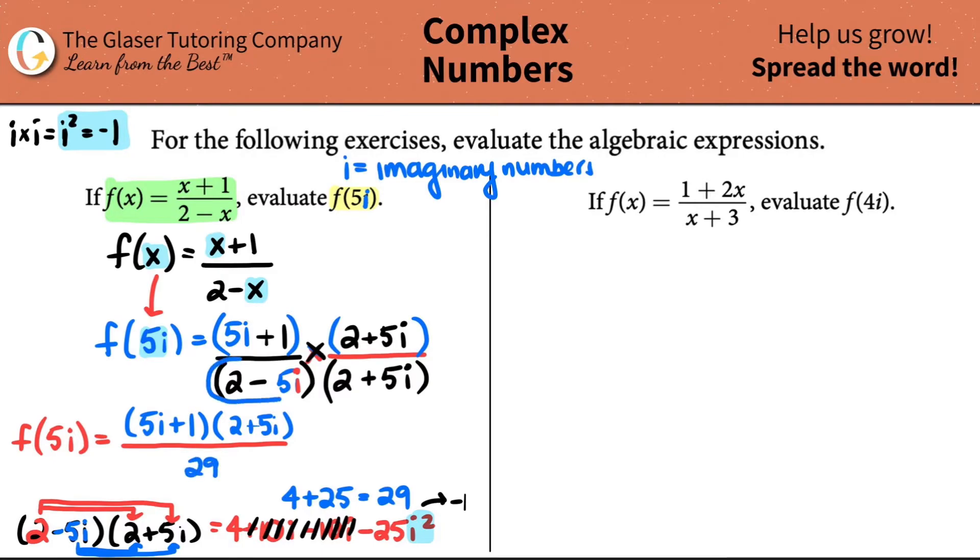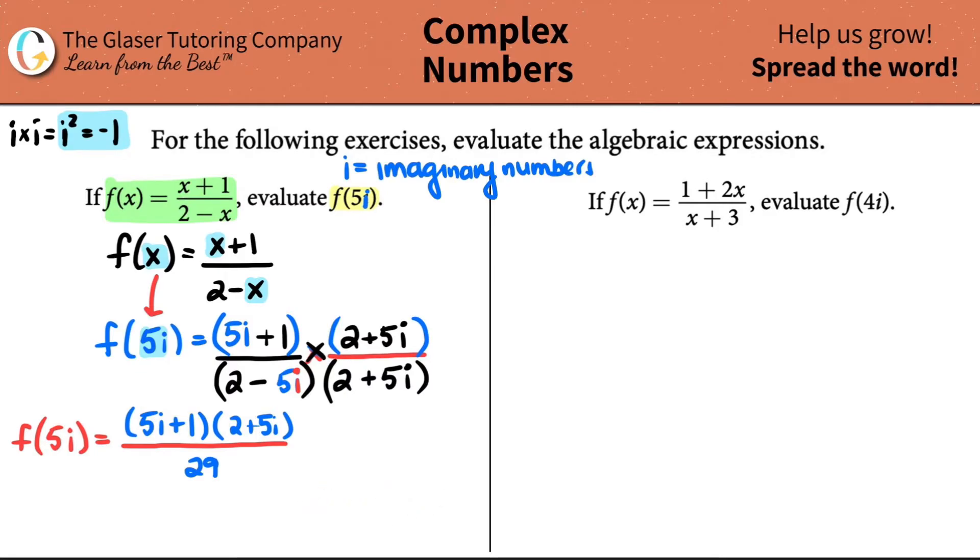Do you see how now by multiplying these two things, we get a 29 and the i goes away. So if I did it for the bottom, what do you think I have to do to the top? I have to do the same thing. We got to play fair. I have a 5i plus 1 times 2 plus 5i. The 5i has to be multiplied by the 2, but it has to also be multiplied by the 5i. And then the 1 has to be multiplied by the 2, but then it's also got to be multiplied by the 5i.